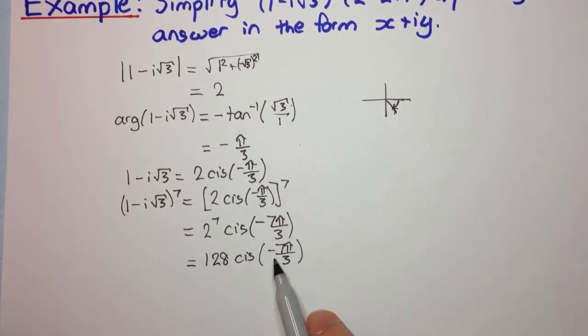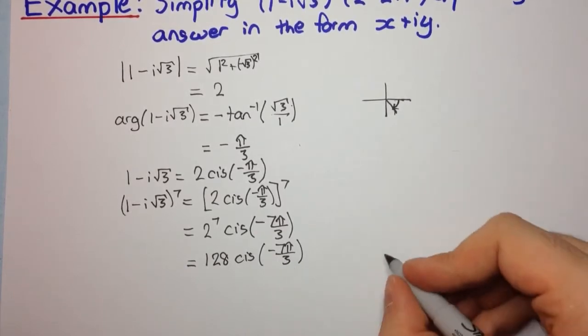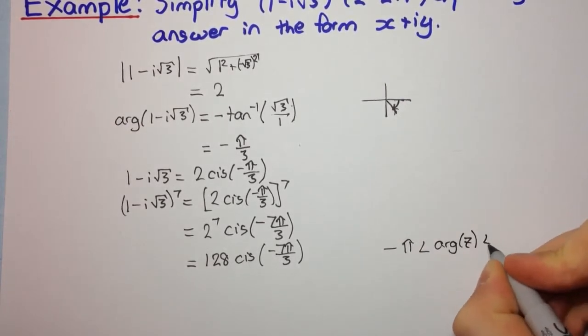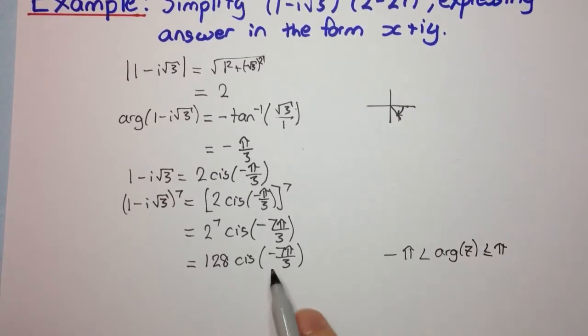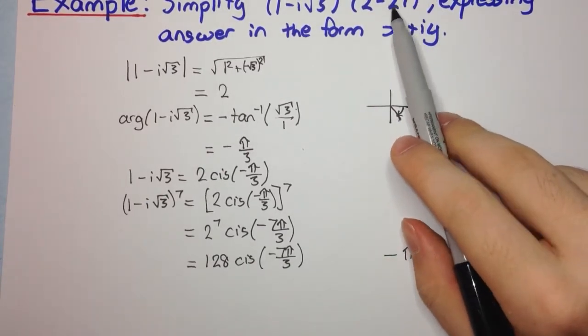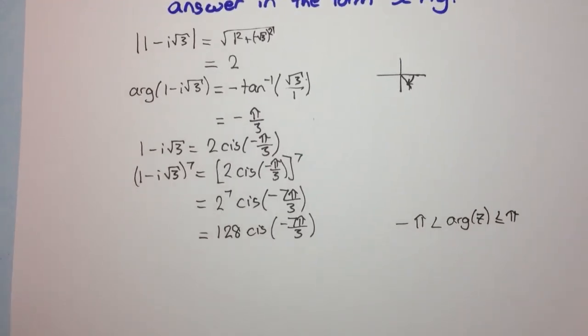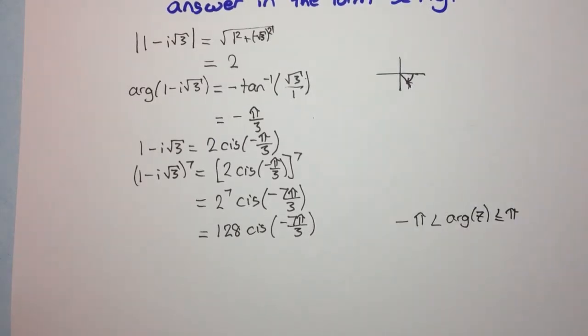Now I haven't put this within our constraints of -π and π, because we're going to be adding it to another angle, and so it's not worth doing it two times or three times. You can just do it all in one. So let's convert this into mod arg form.